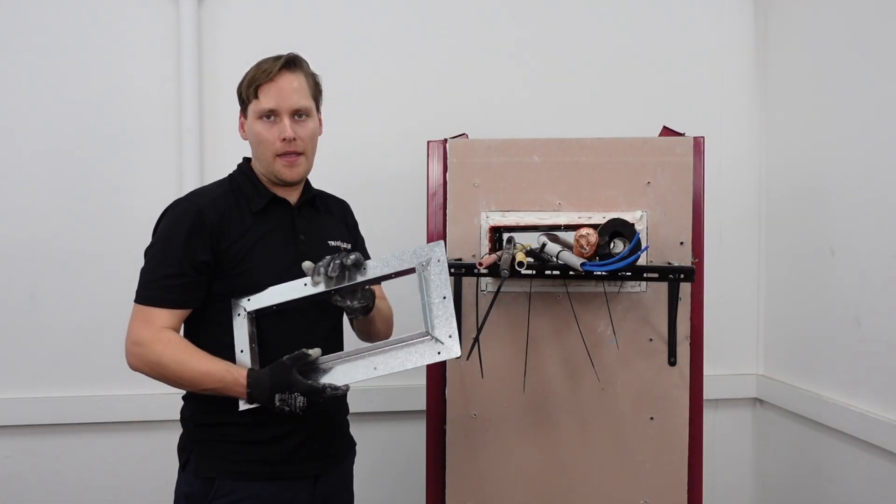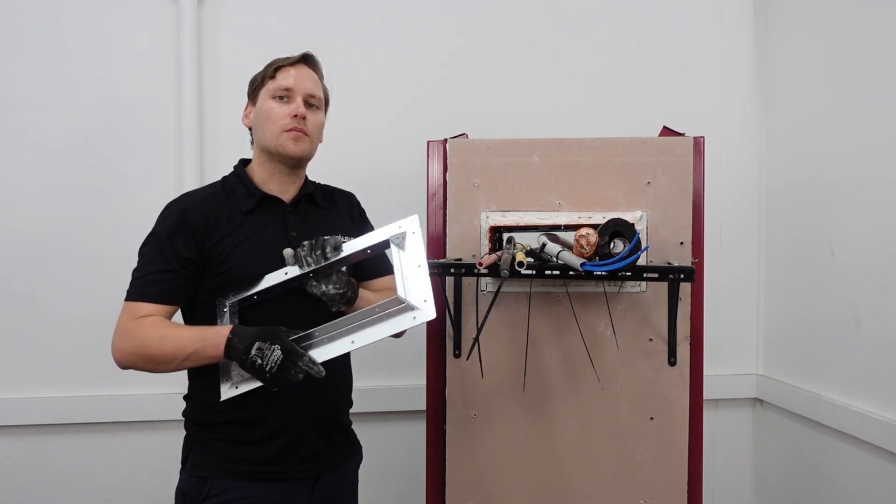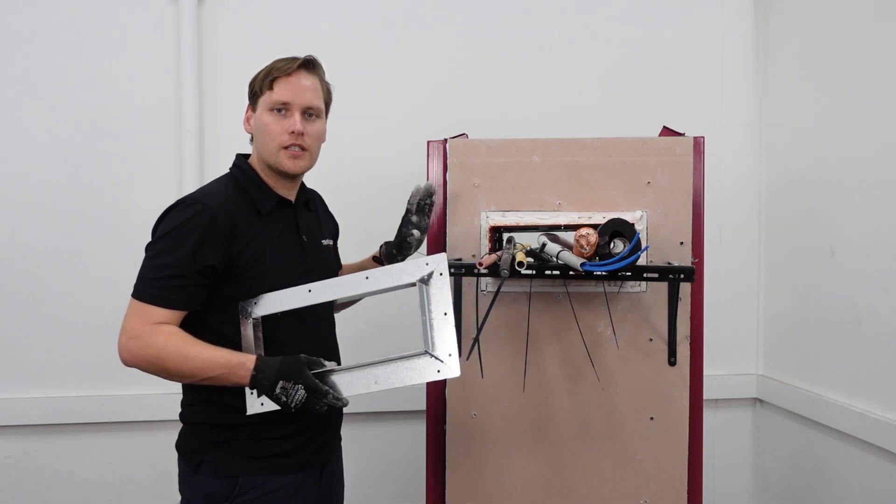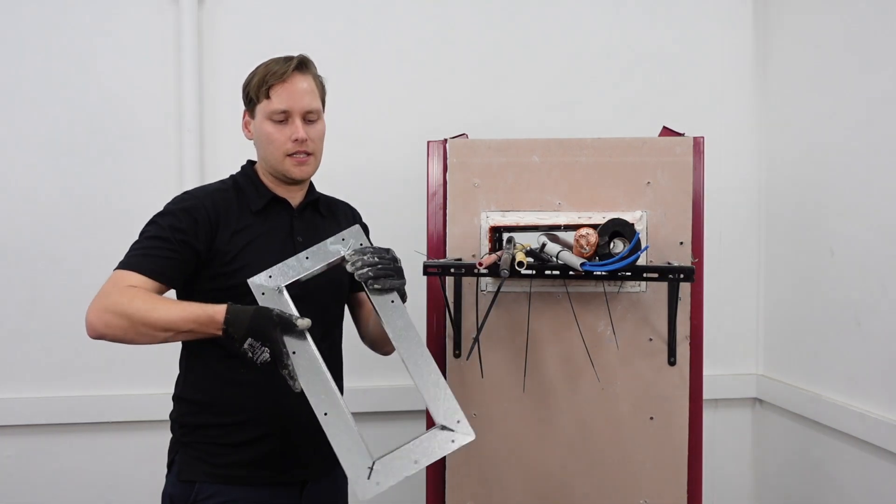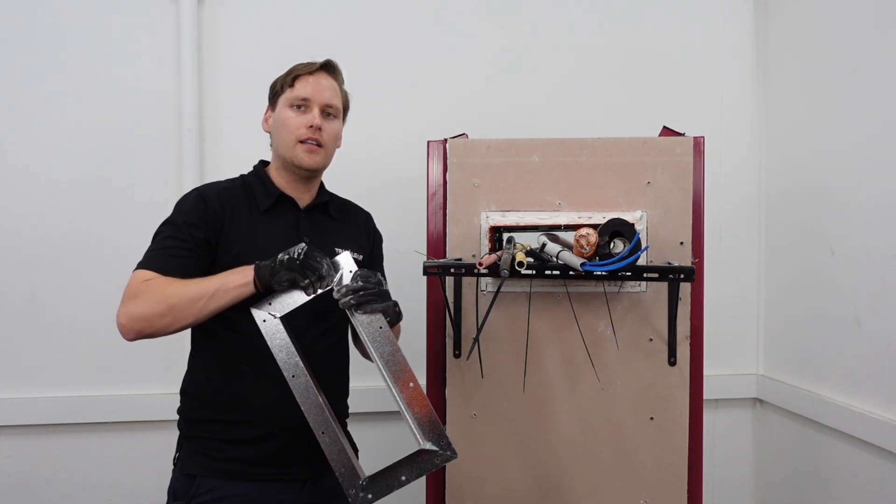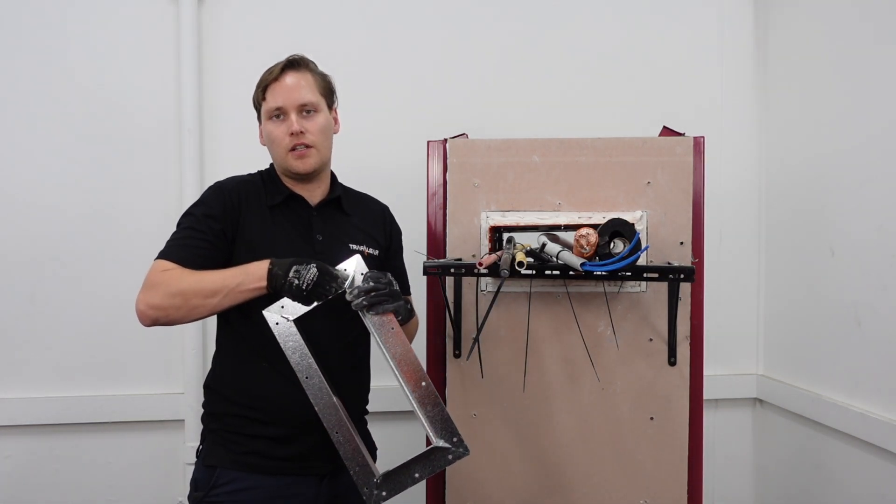Once you've done the sealant, you can now fit the mounting flanges. Now these come supplied to be a friction fit around the box. There are steel rivets in each corner, except for the fourth which has a small nut and bolt. So you can undo that to retrofit it around existing services.